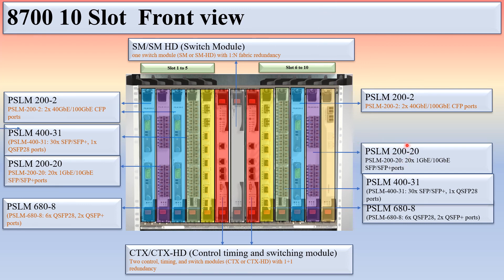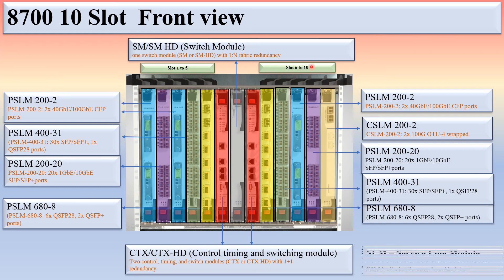In slot 2 and slot 9 there is a PSLM 200-20 — the faceplate capacity is 200G with 20 ports. There is also a CSLM 200-2 — a coherent service line module — with a faceplate capacity of 200G and two ports. You can insert any service line module into any service slot, slots 1–5 or 6–10. PSLM stands for packet service line module, and CSLM stands for coherent packet service line module.